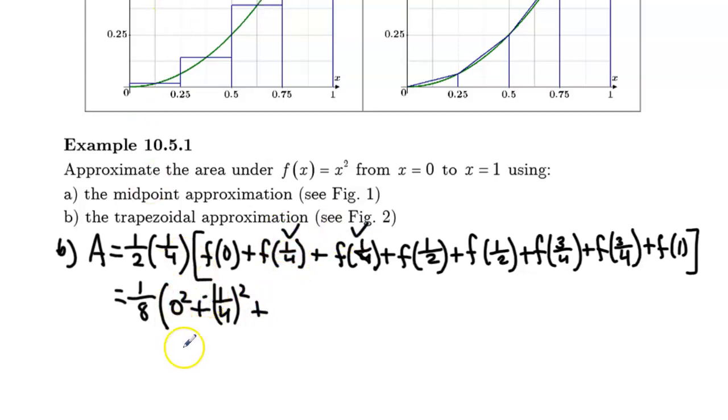I could just simply erase this and include two of them. So this would be plus two times one quarter squared. And then I'd have two of these as well. So that'd be plus two times one half squared. Plus two times three quarters squared. Plus only one f at one, which is one squared.